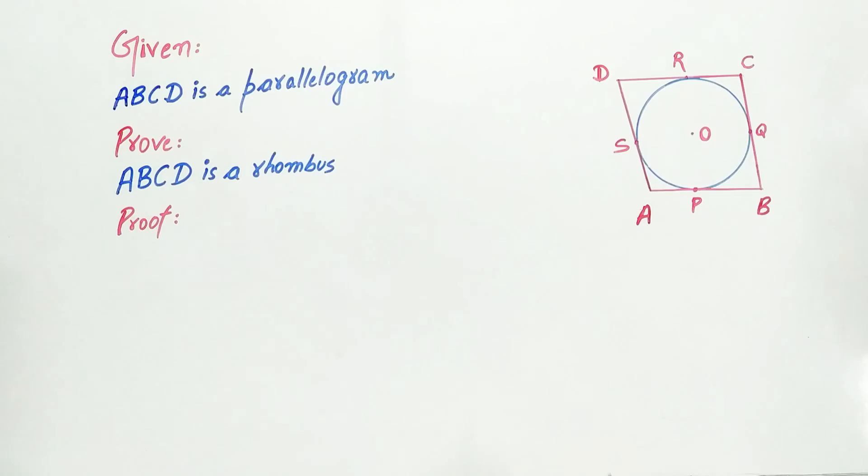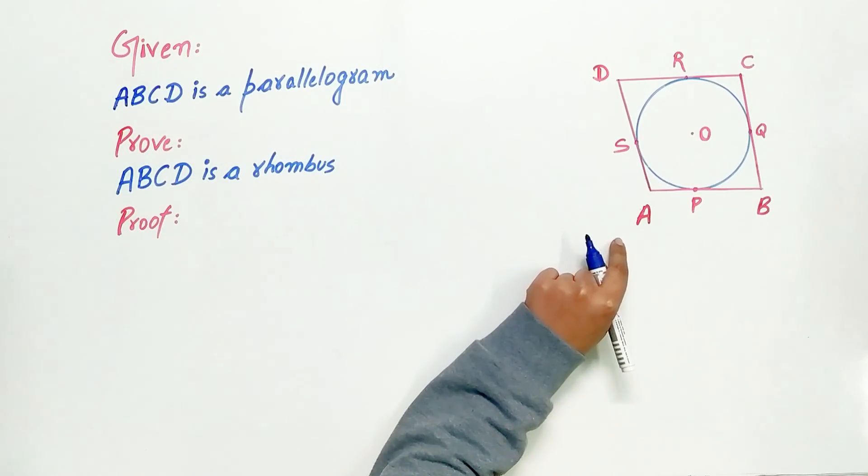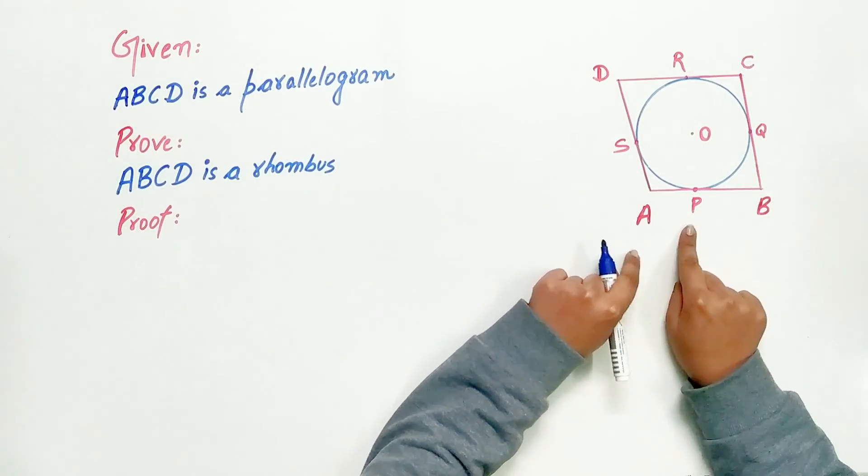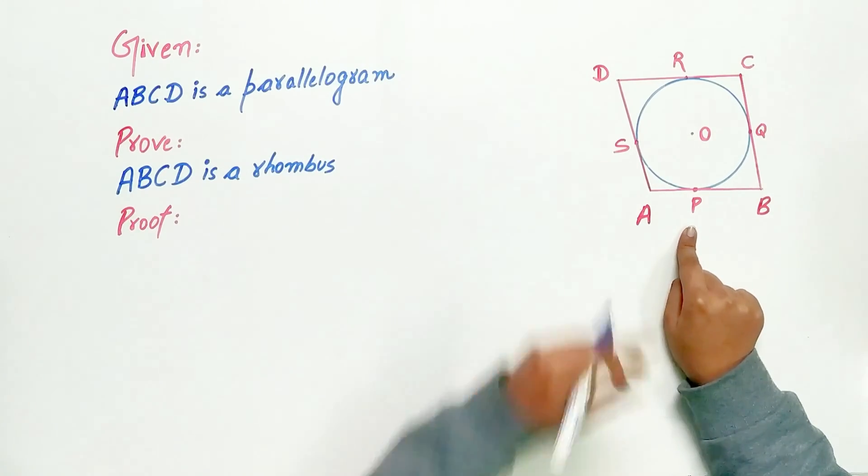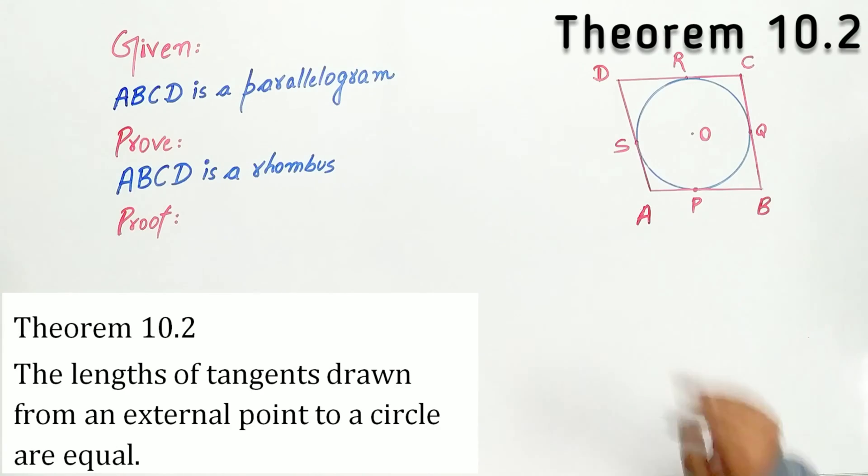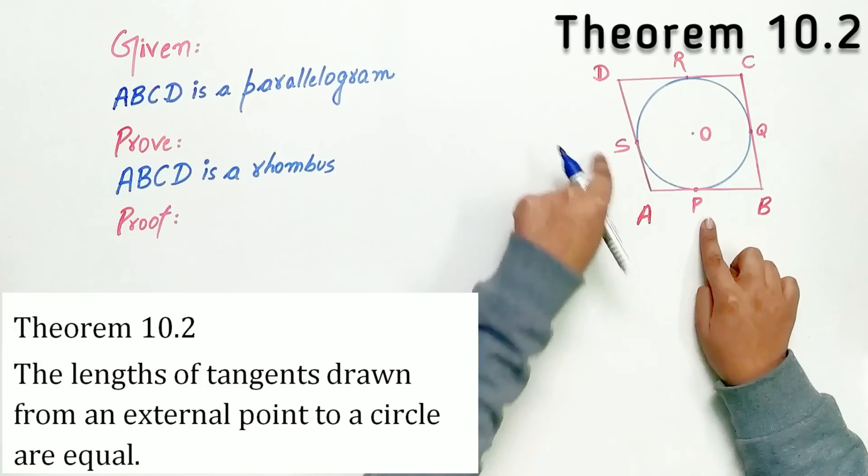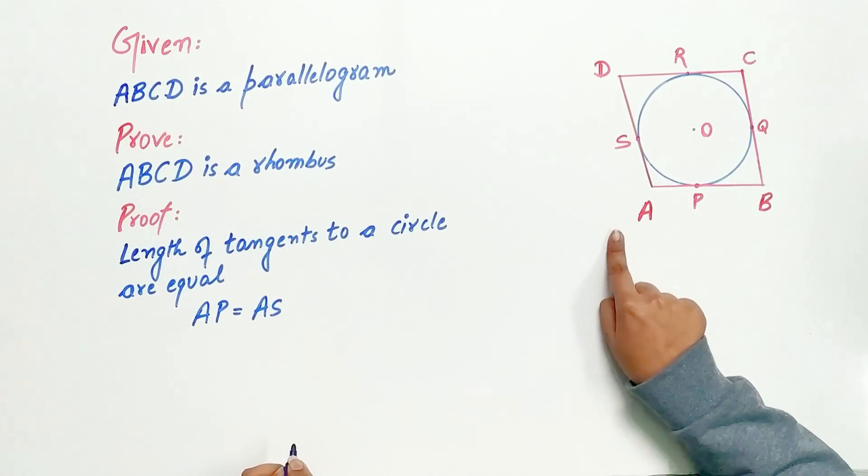Now look carefully. A is an external point. Hence, AP is equal to AS. How? By theorem 10.2 that says the length of tangents from an external point to a circle are equal. AP is equal to AS.